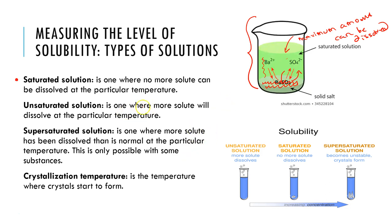An unsaturated solution is one where more solute is able to dissolve at a particular temperature. Remember that temperature alters solubility — cool it down and you get less; heat it up and you can get more. For example, if I dissolved one tablespoon of sugar into 250 mL of water, that would be unsaturated — I could still dissolve more sugar before reaching a saturated solution.